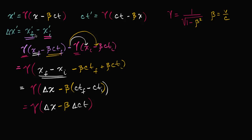Notice it takes almost the exact same form: x prime is equal to gamma times x minus beta ct, and change in x prime is going to be gamma times change in x, minus beta times change in ct.